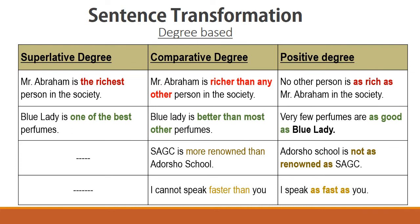Now a practice question: 'Kazi Nazrul Islam is one of the most famous poems of Bangladesh.' Can you transform it into comparative as well as positive degree? Try it using the same structure we just learned.